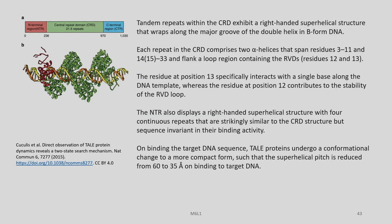Each repeat in the CRD comprises two alpha helices spanning residues 3 to 11 and 14 to 33, flanking a loop region containing the RVDs at positions 12 and 13 in the center. The residue at position 13 specifically interacts with a single base along the DNA template, whereas the residue at position 12 contributes to the stability of the RVD loop — which we have emphasized again and again.